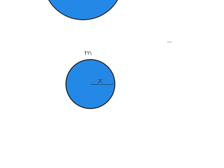Now assume that we are adding a small mass dm from infinity to this sphere, so that there is a slight increase in its volume. Its radius is slightly increased by a small value dx, meaning the initial radius was x and it becomes x plus dx.